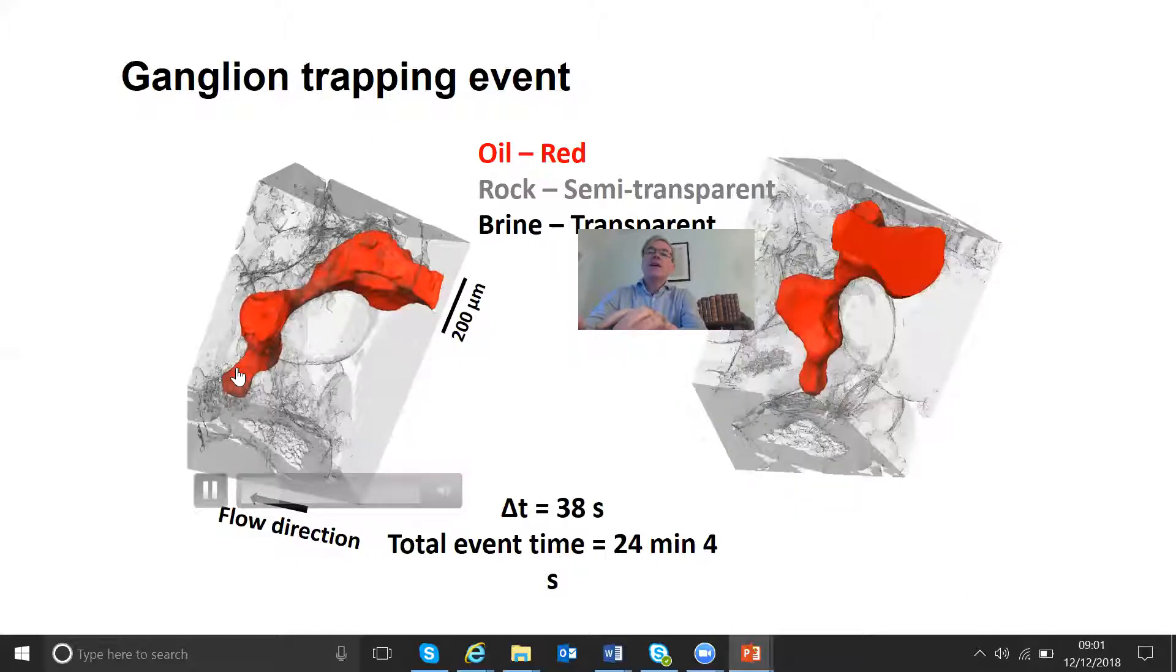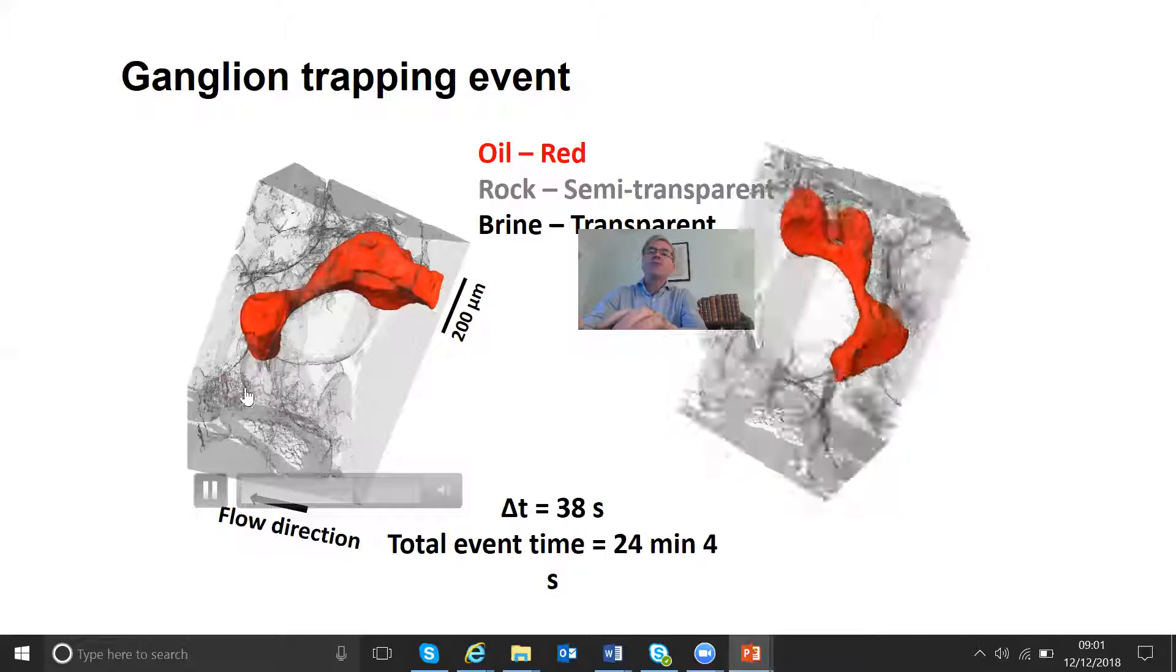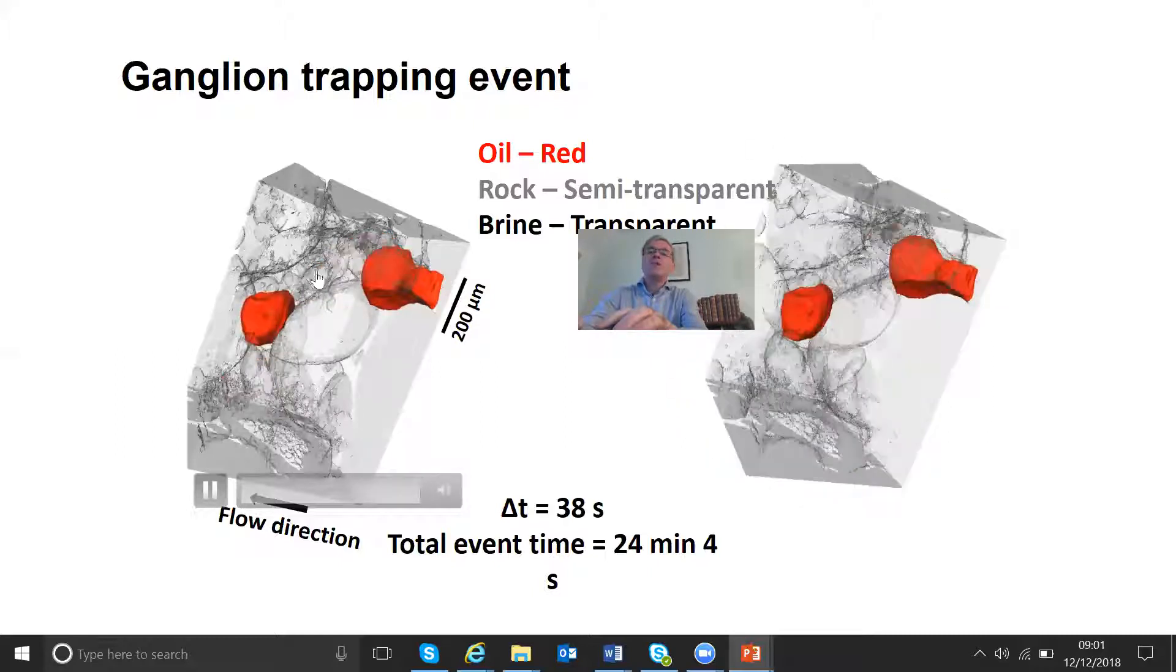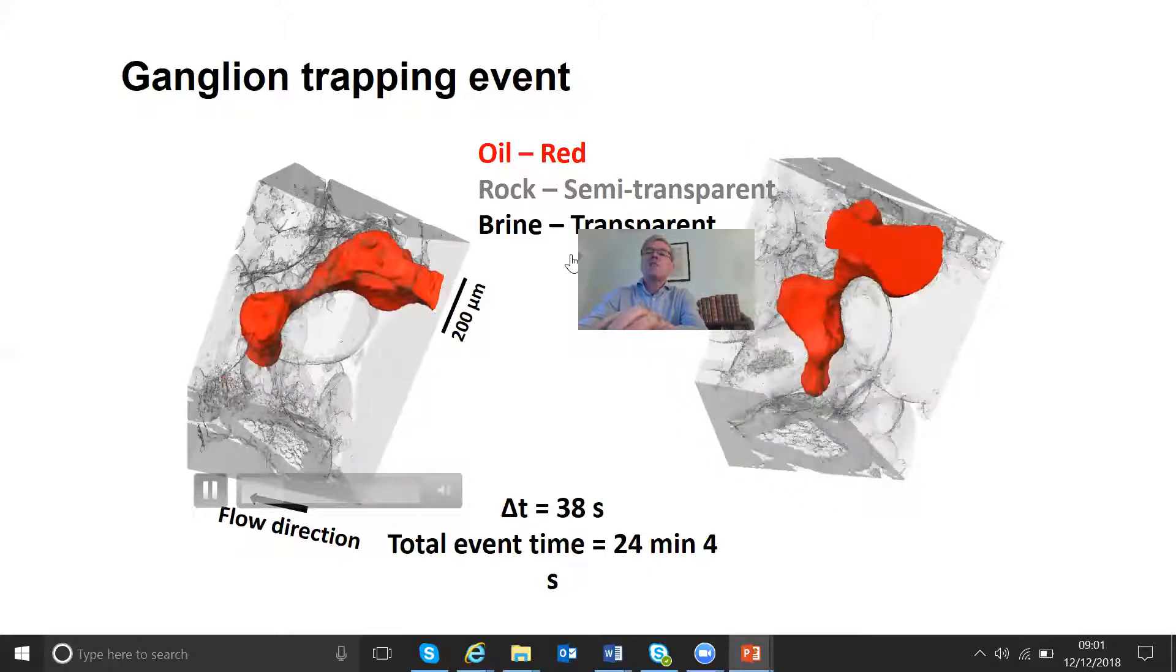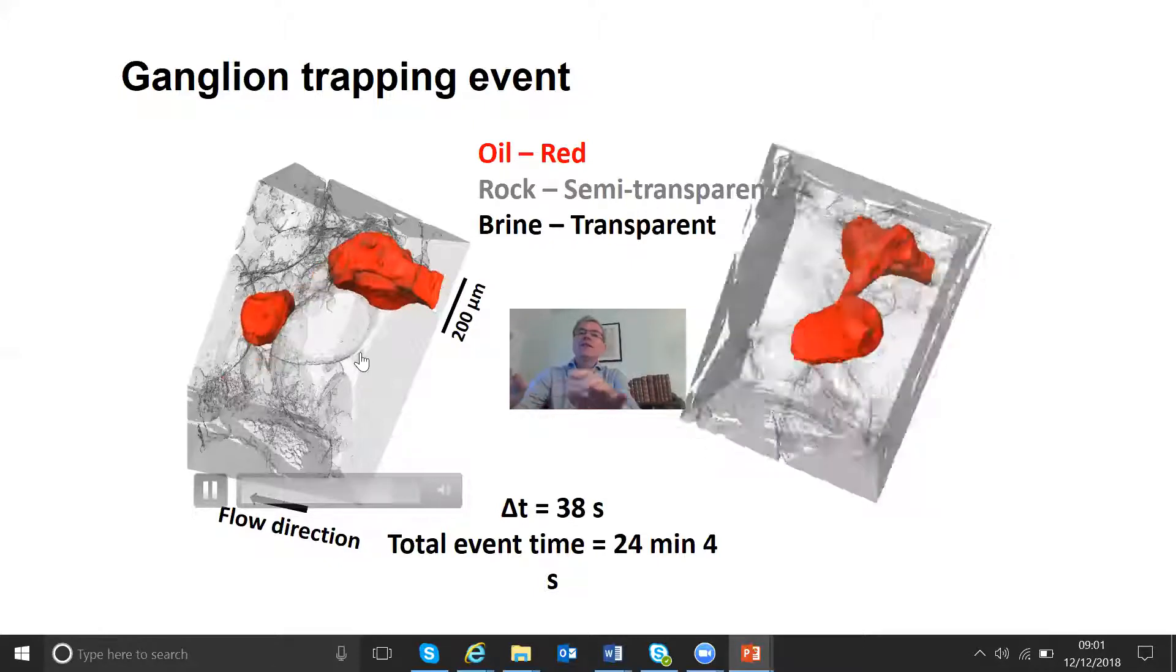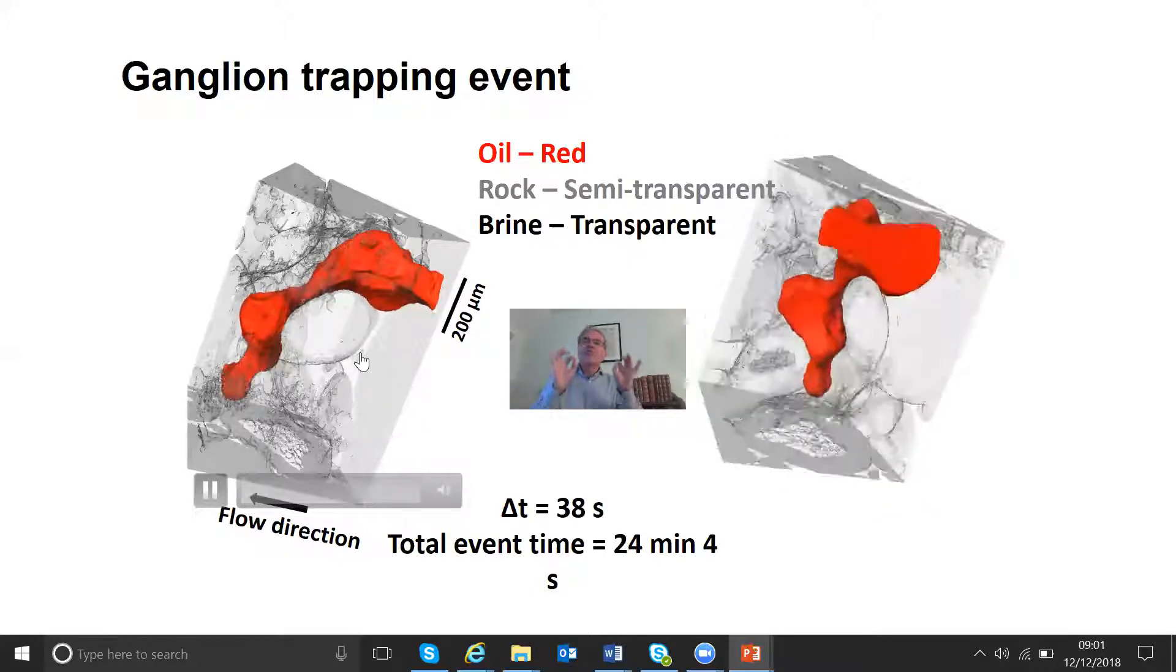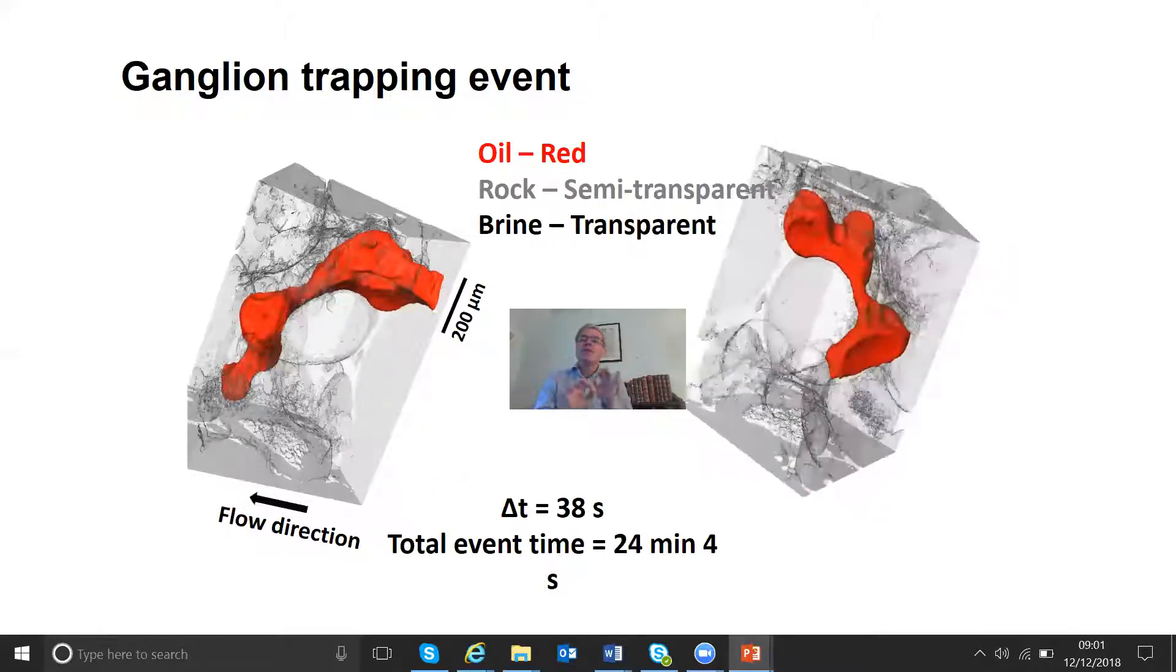What we see, the oil moves in, the water moves in here and displaces the oil. And then it's swelling here and traps. So this is this ganglion of trapping event shown repeatedly.